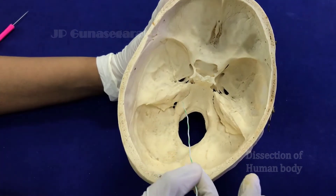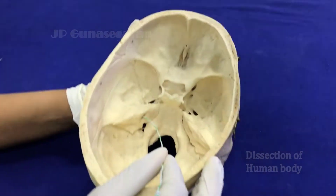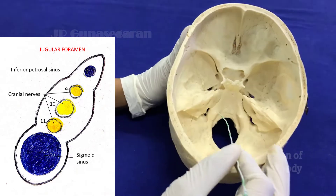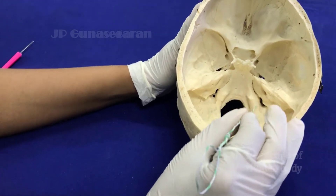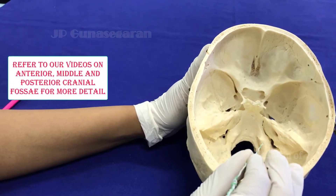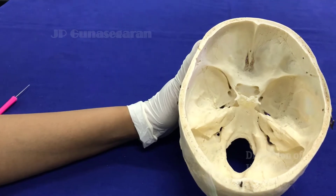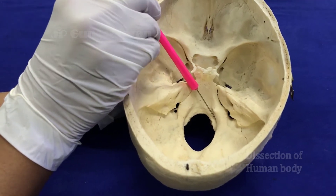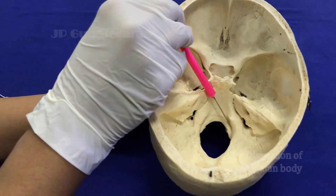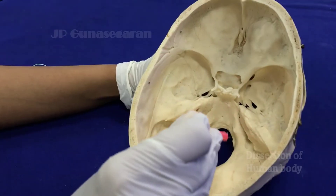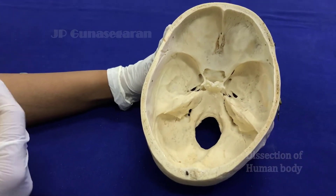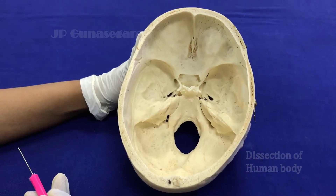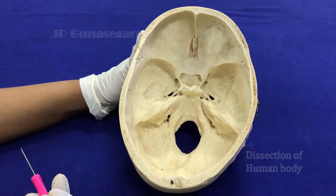In the posterior cranial fossa, we have the internal acoustic foramen and the jugular foramen. The two lateral sides of foramen magnum are formed by the condylar part of the occipital bone. In the anterior part of the condylar part of the occipital bone are two foramina called the hypoglossal canals, which transmit the hypoglossal nerve out of the cranial cavity. Then we have the foramen magnum, which transmits mainly the medulla continuing as the spinal cord surrounded by meninges, the vertebro-basilar system of vessels, and the spinal part of the accessory nerve.